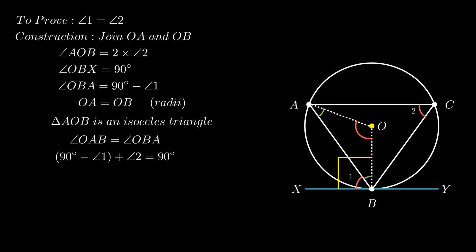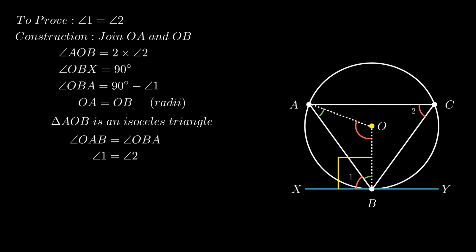On transposing we get 90 minus angle 1 plus angle 2 equals 90 degrees. On further simplification we get minus angle 1 plus angle 2 equals 0 degrees. On transposing we get angle 1 equals angle 2. Hence the theorem is verified.